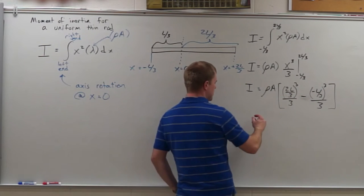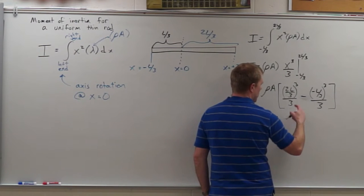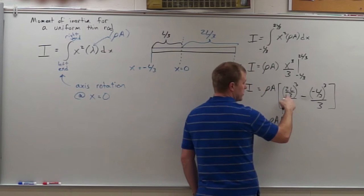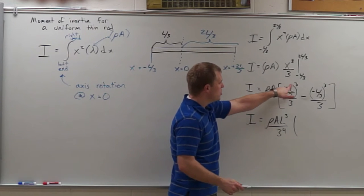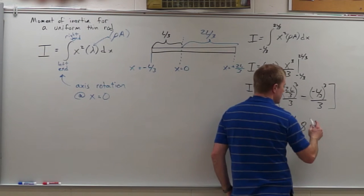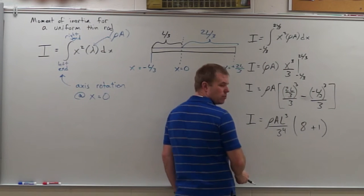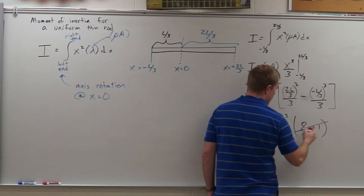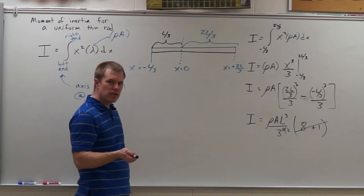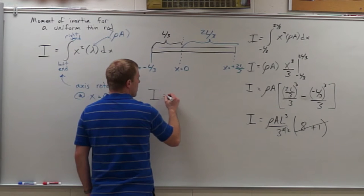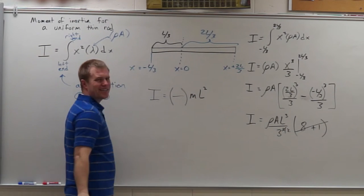Factoring out common terms: there's an L cubed in common, and a three cubed divided by three — so three to the fourth — in common. We're left with two cubed, which is eight, minus negative one, so plus one. Eight plus one equals nine, and nine is three squared, so that cancels out. What remains doesn't yet look like the standard form of some fraction times ml squared, so we need to rectify that.